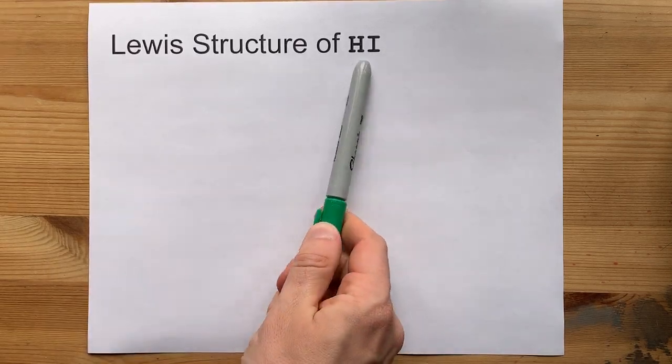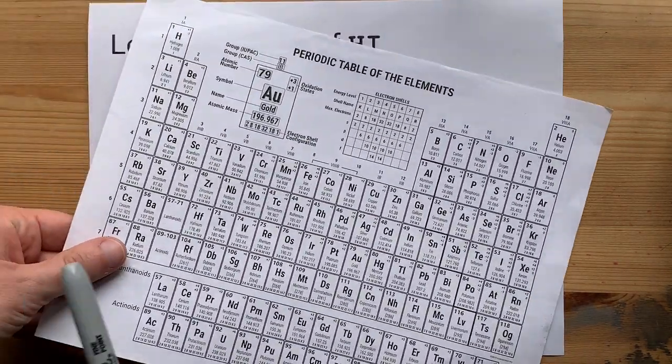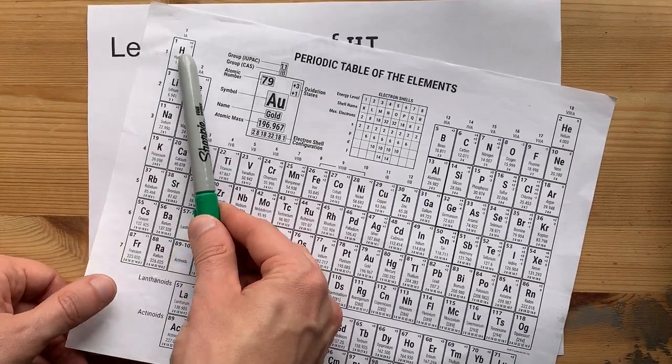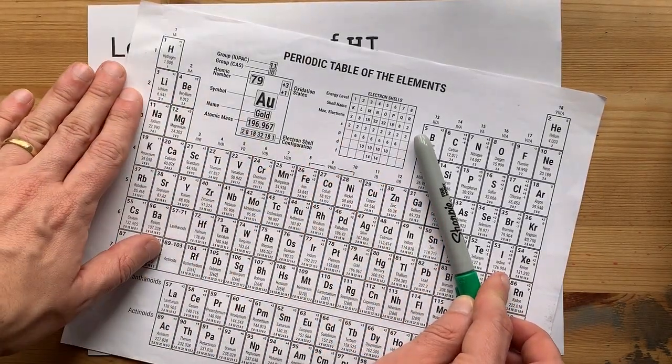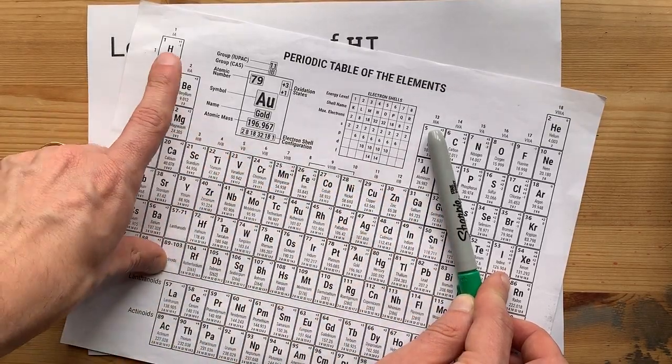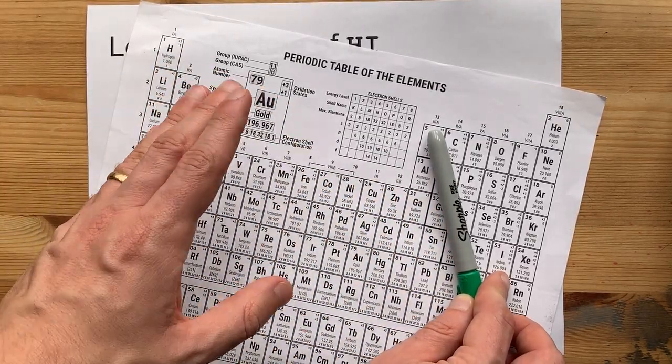Lewis structure of HI, hydrogen iodide. Now hydrogen is a non-metal even though it comes from the left-hand side of the staircase where all these metals are. It's a non-metal. You probably have to memorize that.